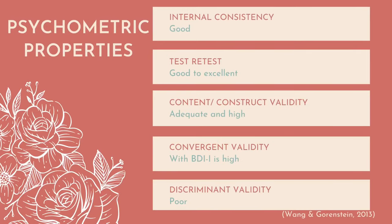Psychometric properties: The internal consistency of the BDI-2 assessment is good. The test-retest reliability also indicates good to excellent. The content and construct validity is adequate and high. The concurrent validity of the BDI-2 assessment with the BDI-1 assessment is high. However, the discriminant validity of the BDI-2 assessment is poor.